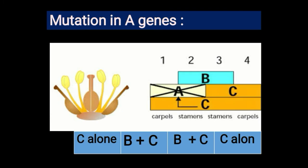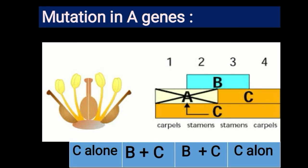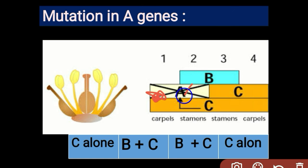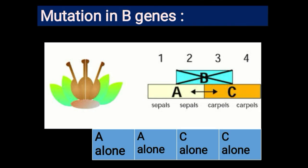First case: mutation in the A gene. If A gene is mutated, C gene becomes more active and takes up the function of A gene. As a result, in the first whorl C gene alone will produce carpels, in the second whorl B plus C gene will produce stamens, and the rest remain the same as normal condition.